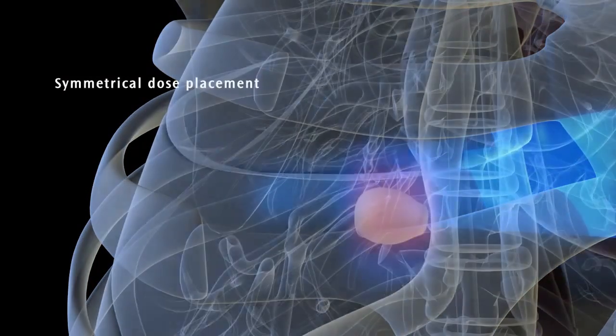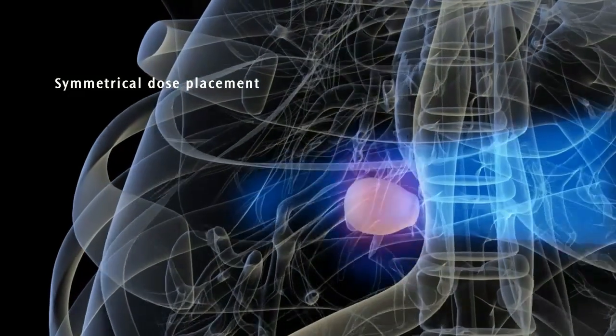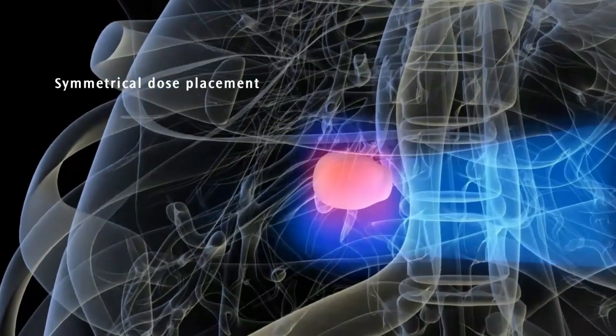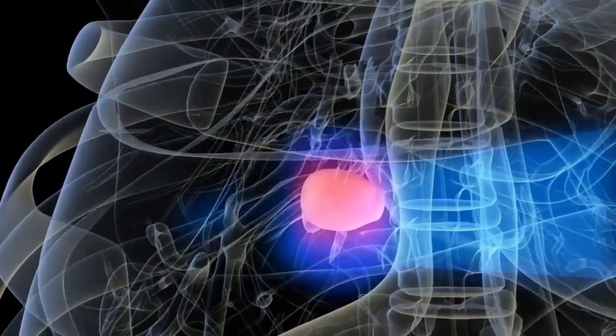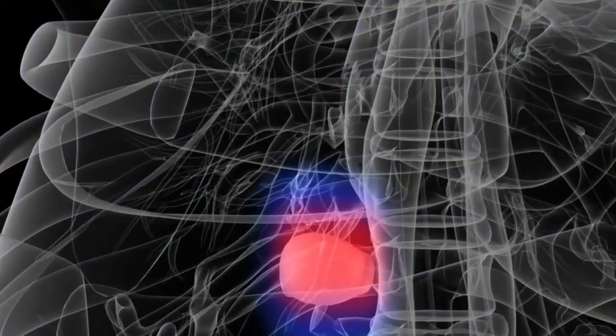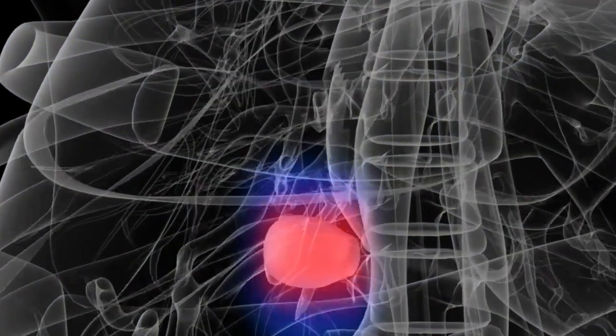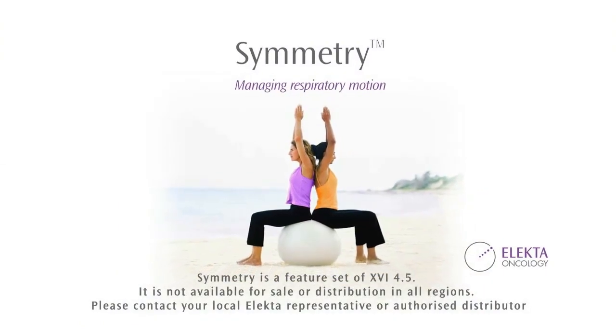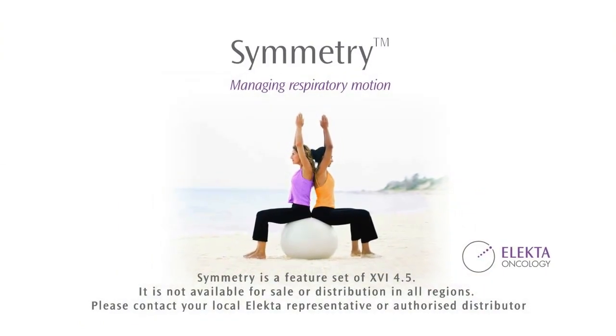Positioning the target to the average ensures a symmetrical dose distribution. Managing respiratory motion knows where the target is every time you treat.